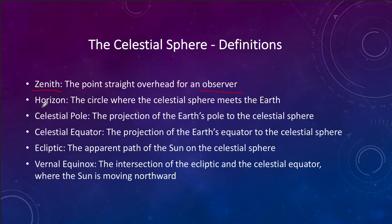Some other terms that are local to the observer: the horizon. If something is on your horizon, it is crossing that border between the Earth and the sky, and it may not do that for somebody else at a different location.